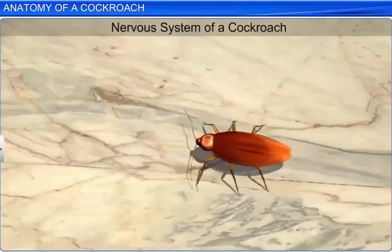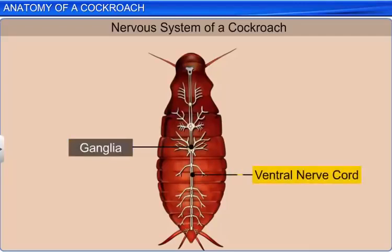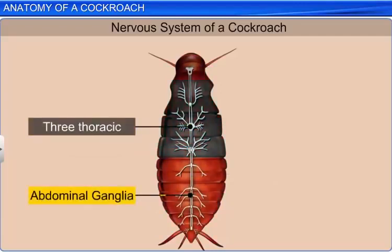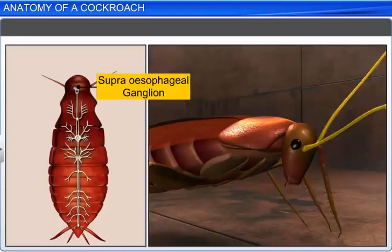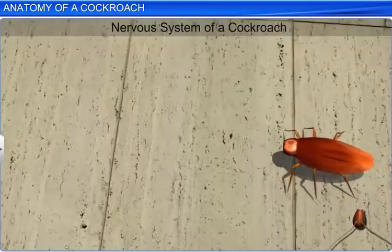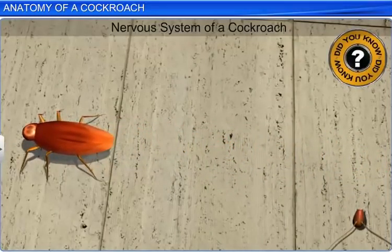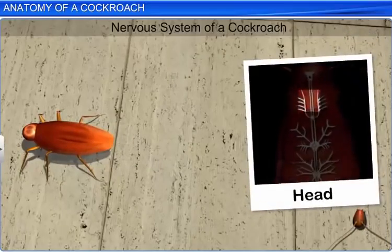The nervous system is also a part of the anatomical study. In the cockroach, this system consists of a series of ganglia in each segment which is attached to a ventral nerve cord and a brain. There are three thoracic ganglia and six abdominal ganglia. In the head, the supra-esophageal ganglion represents the brain which supplies nerves to the antennae and the compound eyes. Interestingly, if you cut off the head of a cockroach, it can survive for almost a week. This is because the head holds a small part of the nervous system while a large part of the system is present in the thorax and abdomen.